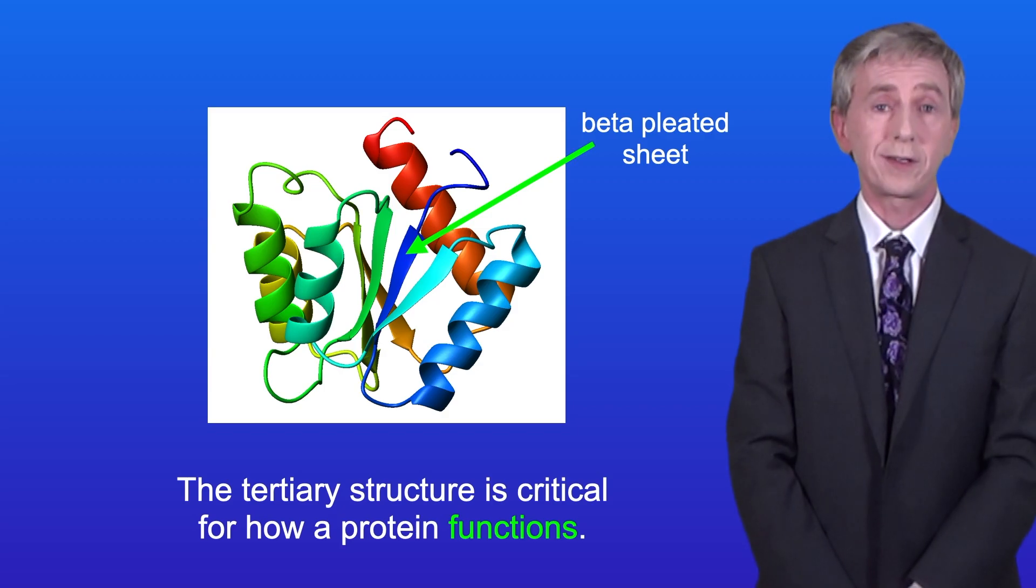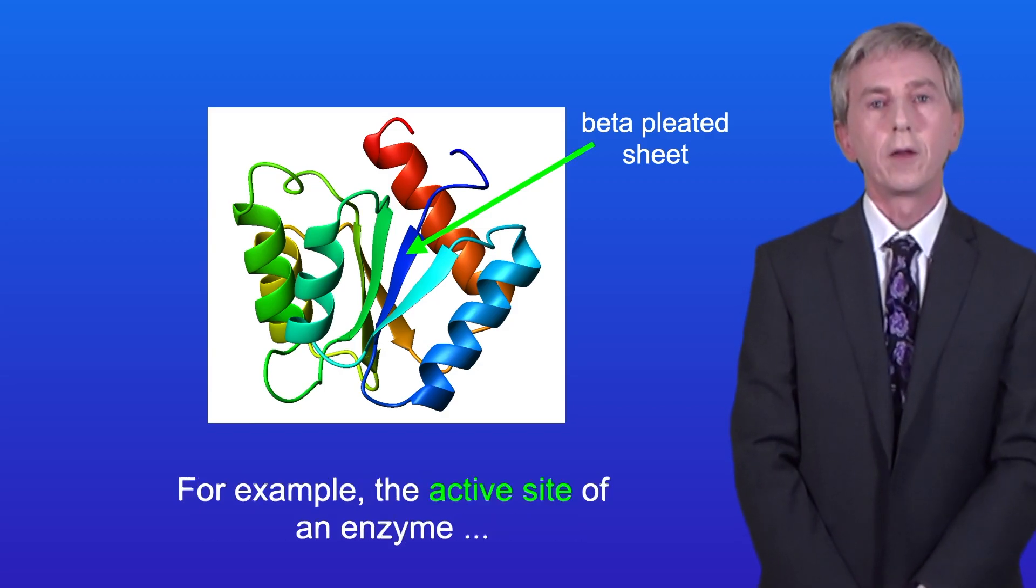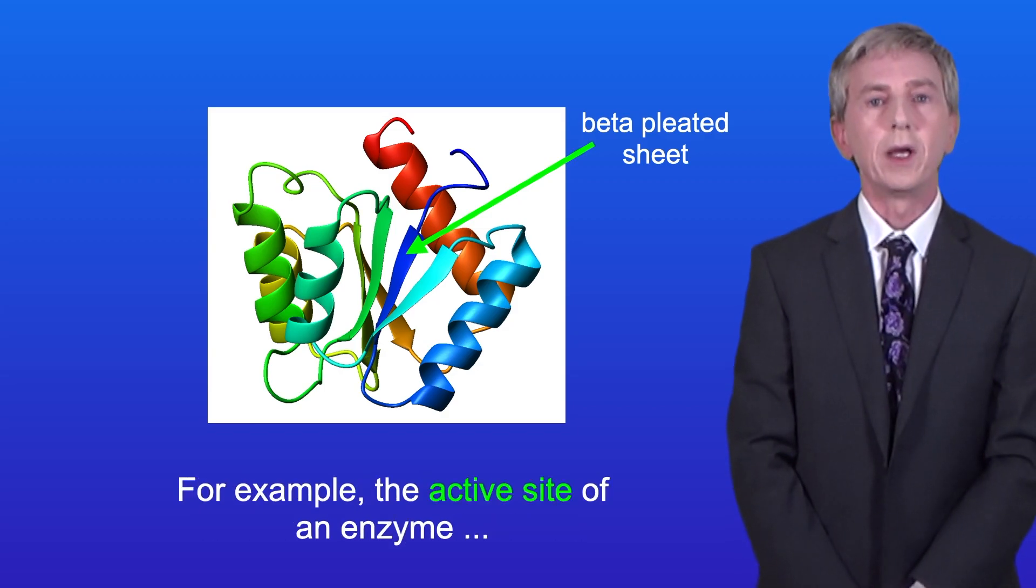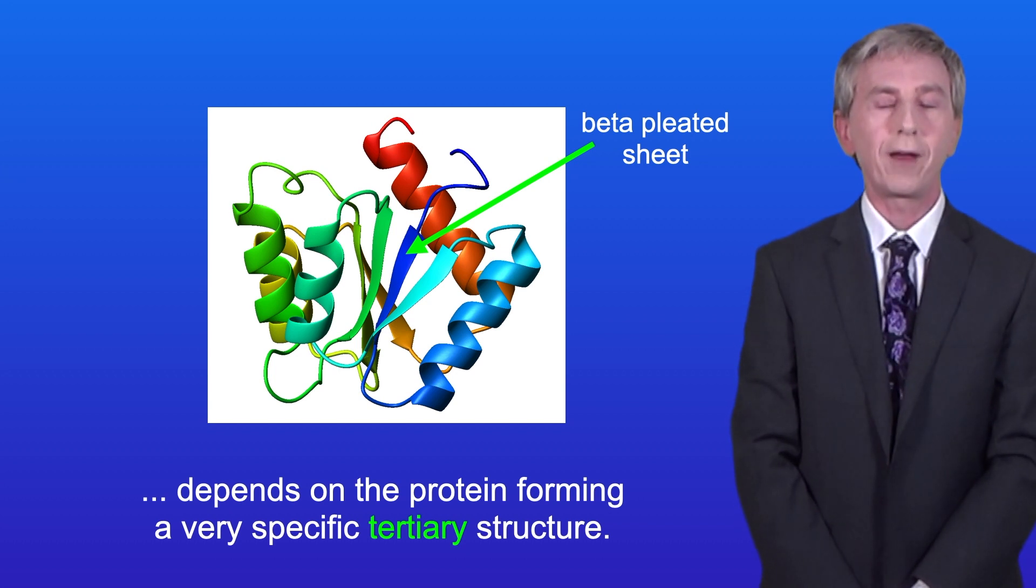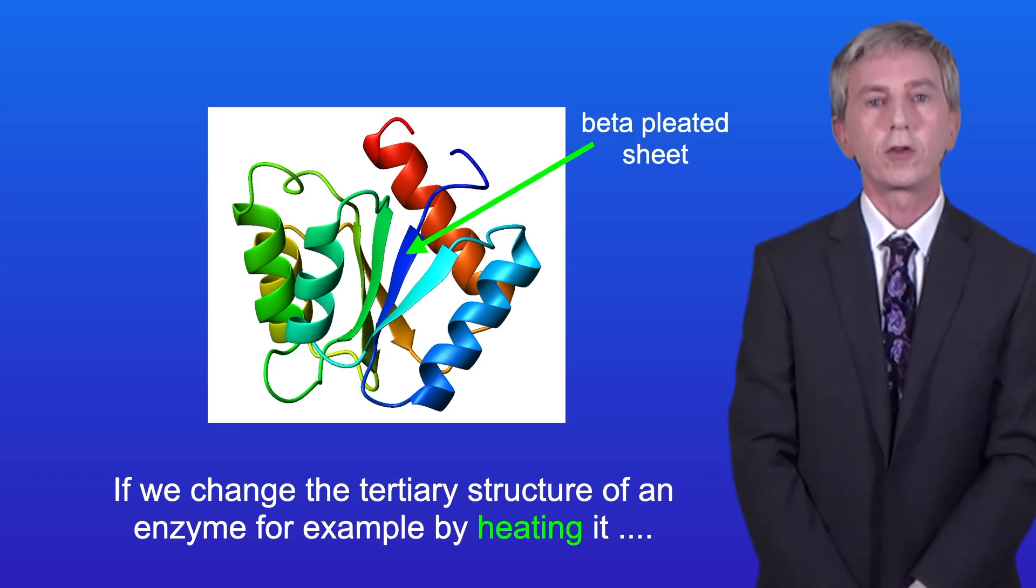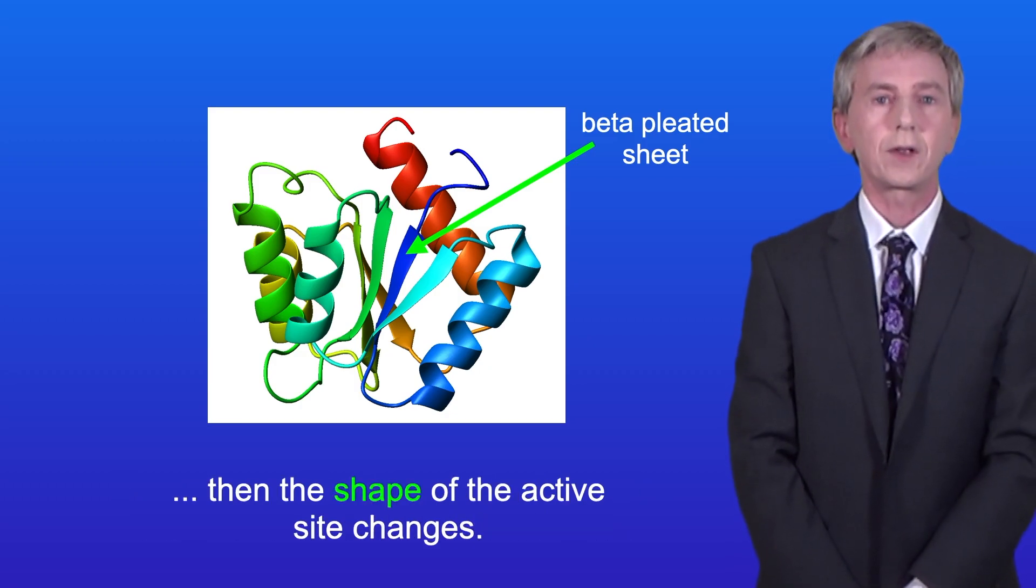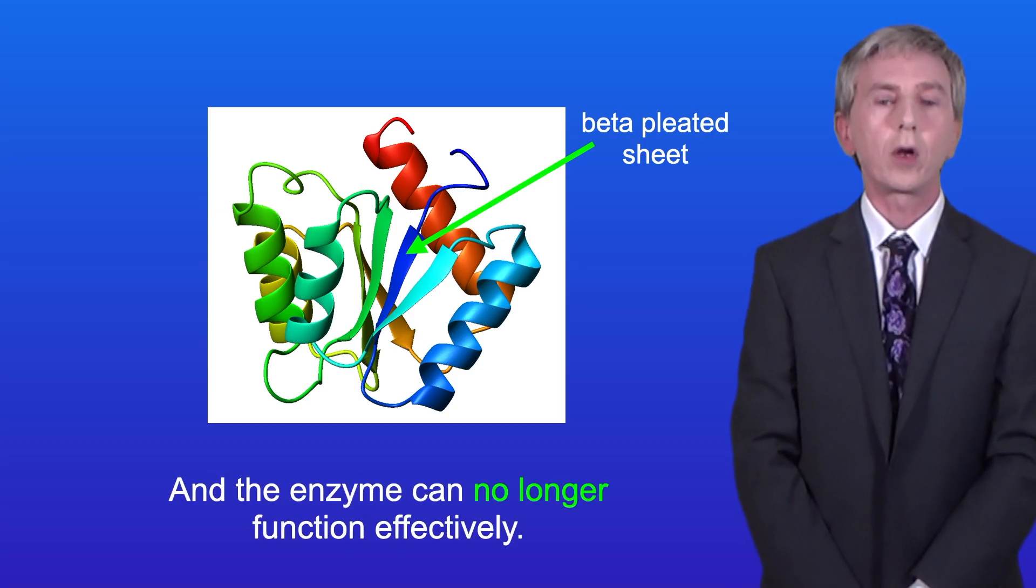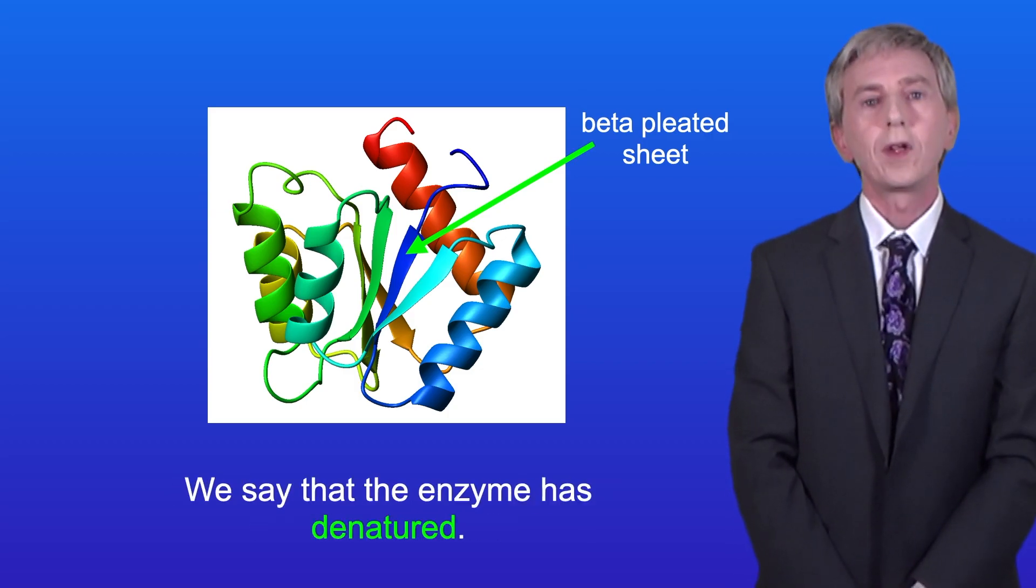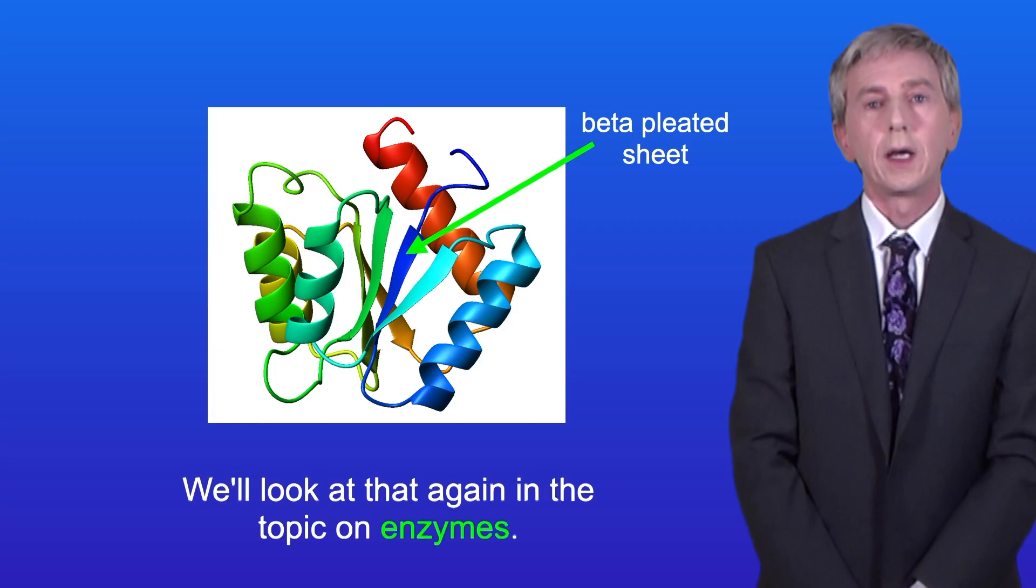The tertiary structure is critical for protein function. For example, the active site of an enzyme depends on the protein forming a very specific tertiary structure. If we change the tertiary structure of an enzyme, for example by heating it, then the shape of the active site changes and the enzyme can no longer function effectively. We say that the enzyme has denatured, and we'll look at that again in the topic on enzymes.